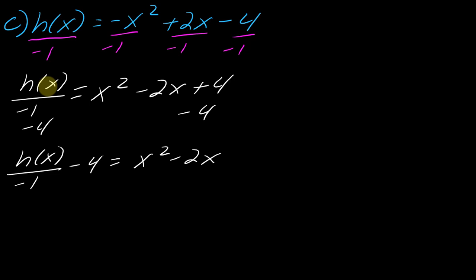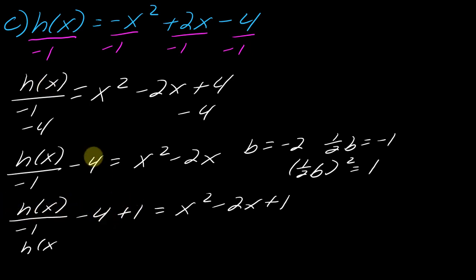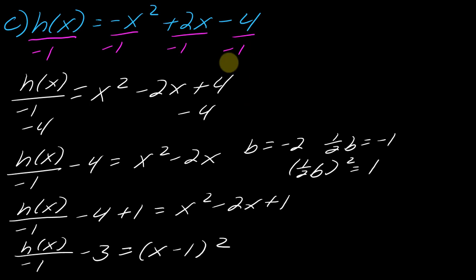Now I can complete the square. My b is negative two, my half-b is negative one, and my half-b squared is positive one. So now I need to add positive one to each side: h(x) over negative one minus four plus one equals x squared minus 2x plus one. Collecting like terms: h(x) over negative one minus three. And on the right side, I factor it as x minus one squared.